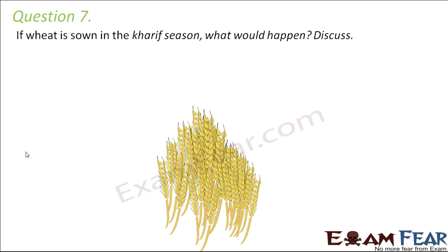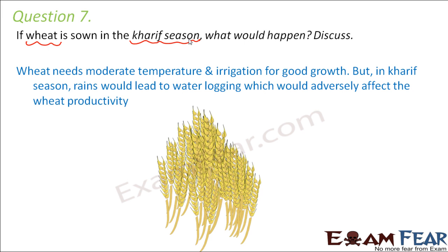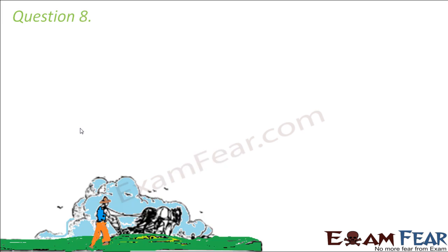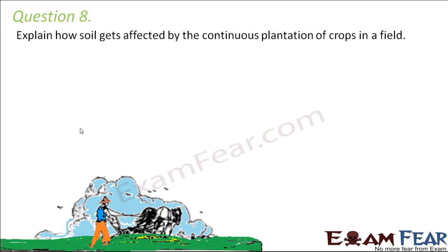Question number seven: if wheat is sown in the kharif season, what would happen? Wheat is a rabi crop — it needs less water. But the kharif season is the rainy season, so there is a lot of water. Wheat needs moderate temperature and irrigation for good growth. Heavy rains in the kharif season would lead to water logging, which would adversely affect wheat productivity, drastically reducing it.